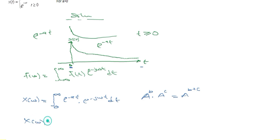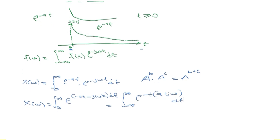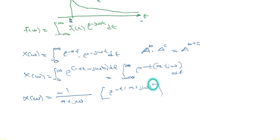So X of omega is equal to the integral from zero to infinity. Applying this exponent law, we combine the exponents to get exponential of minus at minus j omega t, dt. Factoring out minus t, which is common, we are left with a plus j omega. Integrating with respect to t, we get X of omega equal to minus one over a plus j omega, times exponential minus t(a plus j omega), evaluated at the limits from zero to infinity.